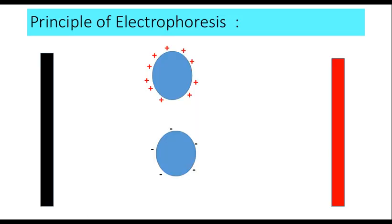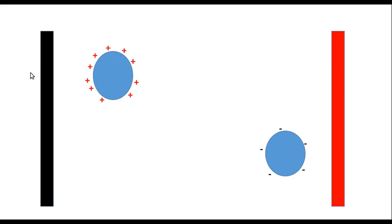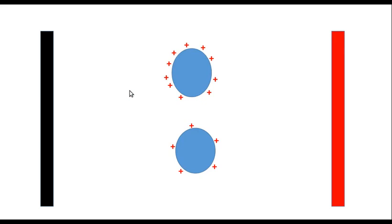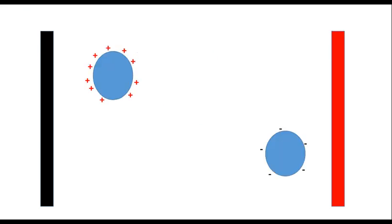What is the principle of electrophoresis? If in an electrical field, between positive and negative electrodes, you place any charged particle, then under the influence of the electric field, these particles will move. The positively charged particle will move toward the negative electrode, and the negatively charged particle will move toward the positive electrode. After some time, particles that were together will separate.